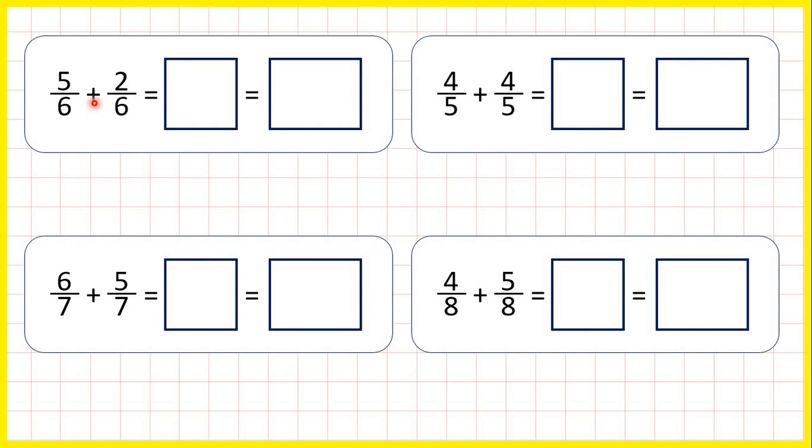So here we're adding fractions with the same denominator, but we have two answer boxes. That's because when we add these fractions, we'll get more than one whole, which means we can write our answer as both an improper fraction and a mixed number.